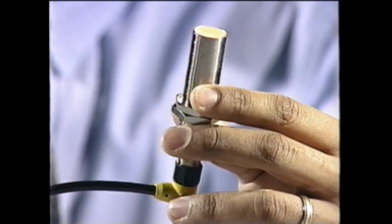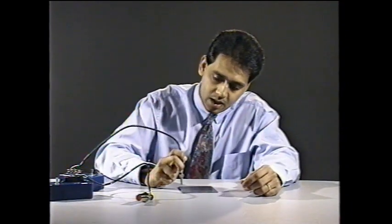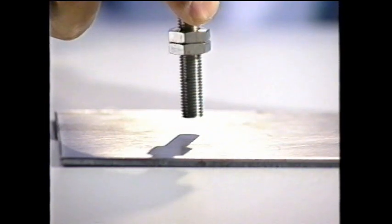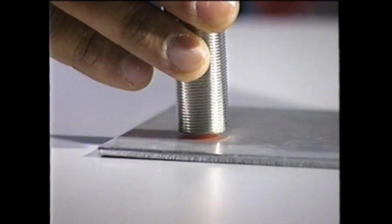I have two proximity switches here. Both are wired to DC power supplies to illustrate this point. One is an 18-millimeter switch, and the other is an 8-millimeter diameter switch. The 8-millimeter inductive proximity switch has a smaller ferrite core than the 18-millimeter. Therefore, it has a smaller sensing range. You can see the sensing range is approximately one millimeter. The 18-millimeter switch has a larger ferrite core and has considerably more sensing range — approximately five millimeters. Therefore, the larger the ferrite core, the more sensing range you would have for an application.